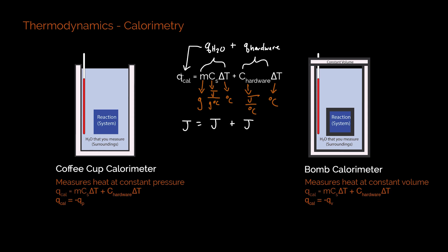And so when you see this qcal, you should see that qcal is equal to q of the surroundings. And so if I wanted to get into the perspective of the system, all I have to do is stick a negative sign in front of that. So negative q of the surroundings is going to be equal to my q of the system.